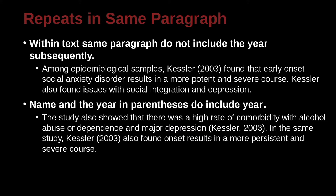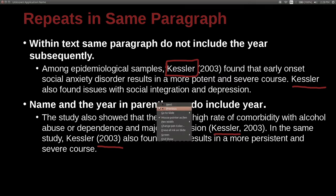To recap quickly: if you have the same paper cited twice, and the first time the name of the author is outside the parentheses, then the next time you do not need a date. However, if the first time is inside the parentheses, the second time you do need a date again — you need to repeat it. As for the second citation itself, whether it's inside or outside parentheses doesn't matter.